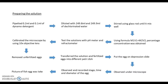Then we prepare the solution. We pipet 0.2 ml and 0.1 ml of Dynamo detergent and dilute with 249.8 ml and 249.9 ml of dechlorinated water respectively in a 250 ml beaker. The solution in both beakers was stirred using a glass rod until well mixed. By using the formula M1V1 = M2V2, the percentage concentration of the diluted Dynamo detergent was obtained, which is 0.08% and 0.04% respectively. Both solutions were then tested using a pH meter and refractometer to obtain the pH and salinity.